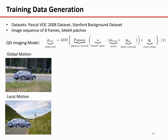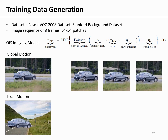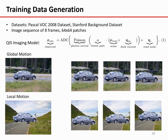The datasets we use are Pascal VOC 2008 dataset for global motion and Stanford background dataset for local motion. Each image sequence we generate contains 8 frames, and the patch size is 64 by 64. To simulate noisy data, we use a QIS imaging model shown as equation 1. The light level is controlled by the sensor gain alpha. To create global motion, we shift the patches according to a random continuous camera motion, where the number of pixels traveled ranges from 7 to 35 pixels across the 8 frames — approximately 1 to 5 meters per second. For local motion, we fix the background and shift the foreground using translations and rotations of 0 to 15 degrees.